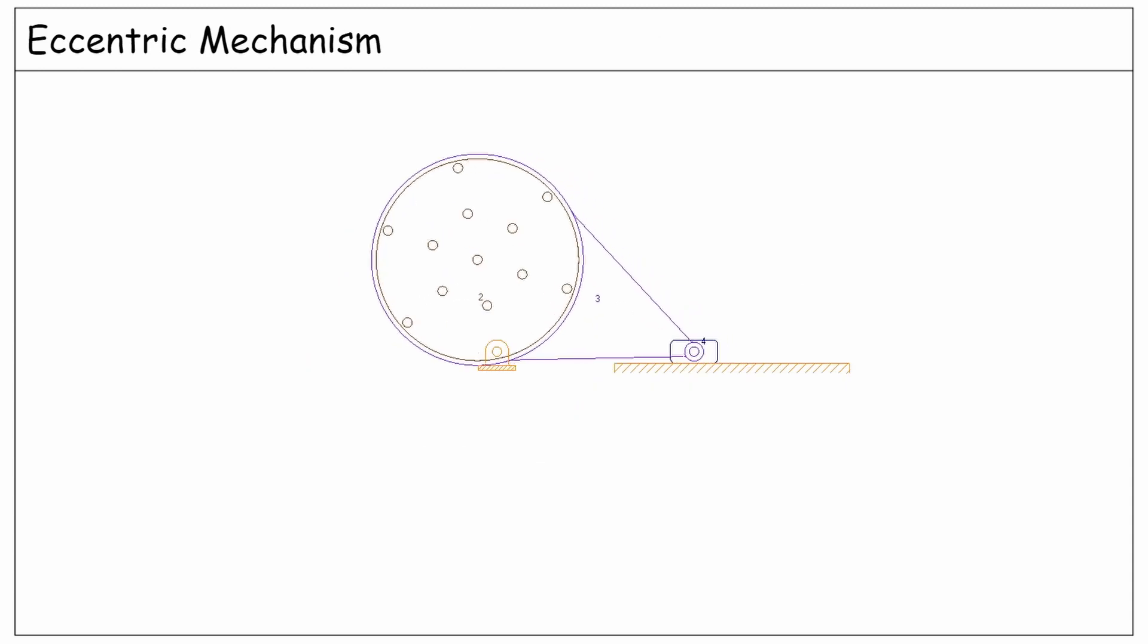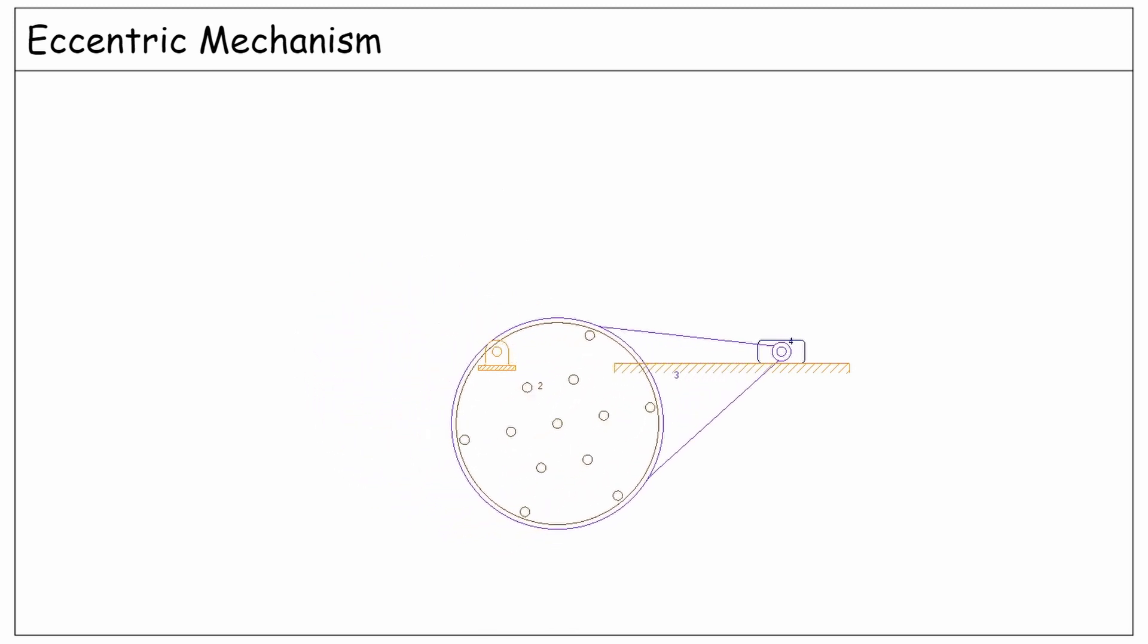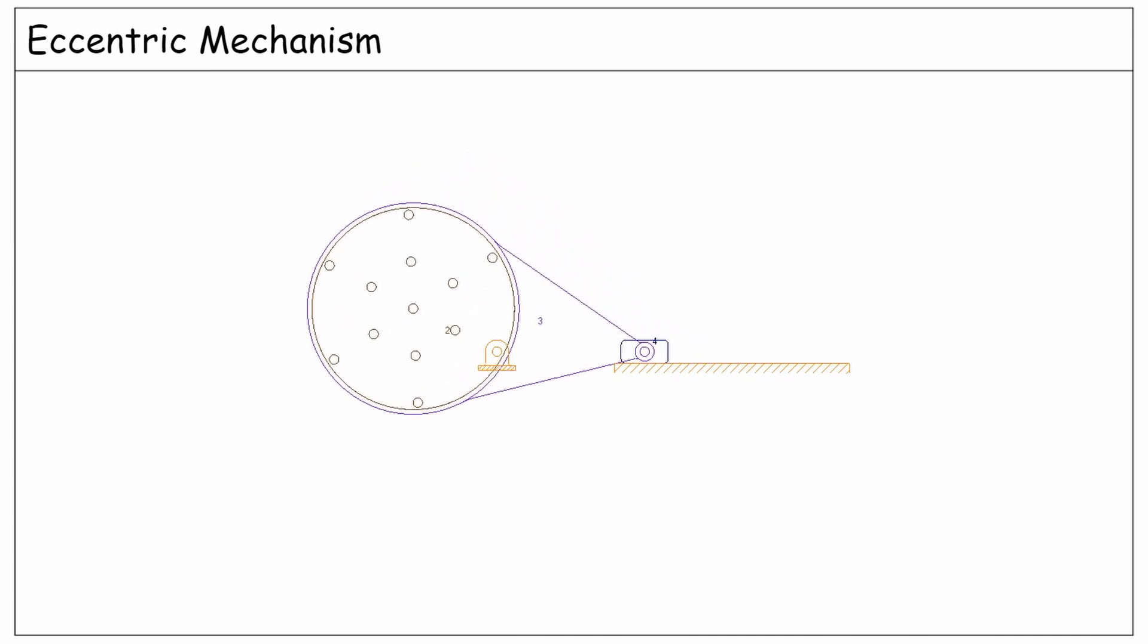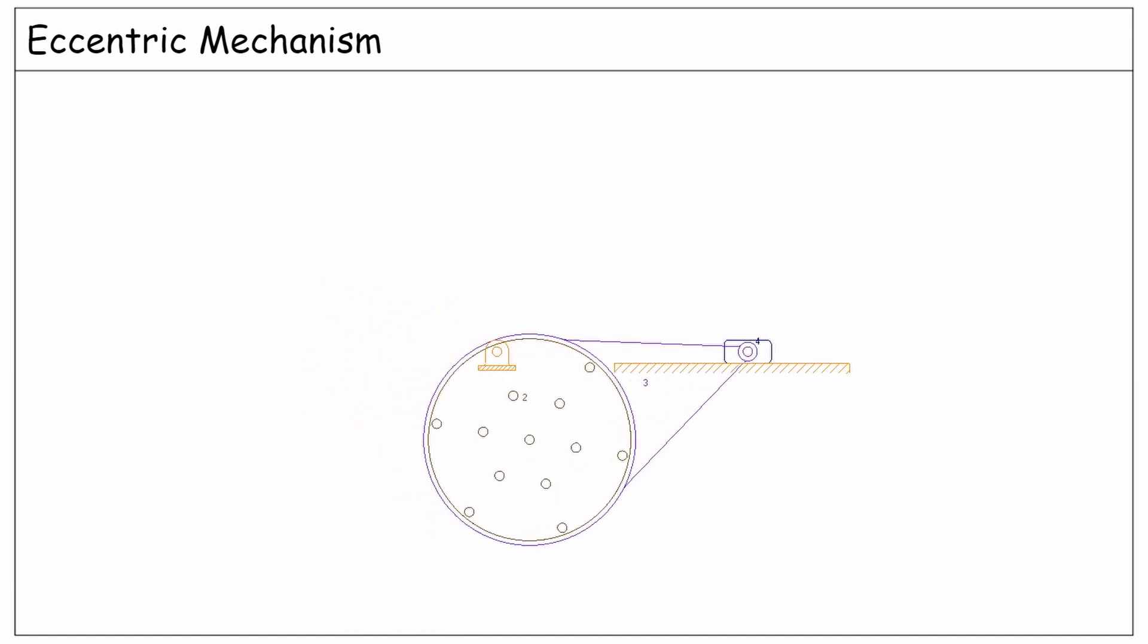Here is a modification of the slider crank linkage, known as an eccentric mechanism. As you see, the crank is a disc with center C, which is pinned off center to the ground at O2, and rotates inside a ring at one end of the coupler link. The other end of the coupler is pinned to the slider at point D.